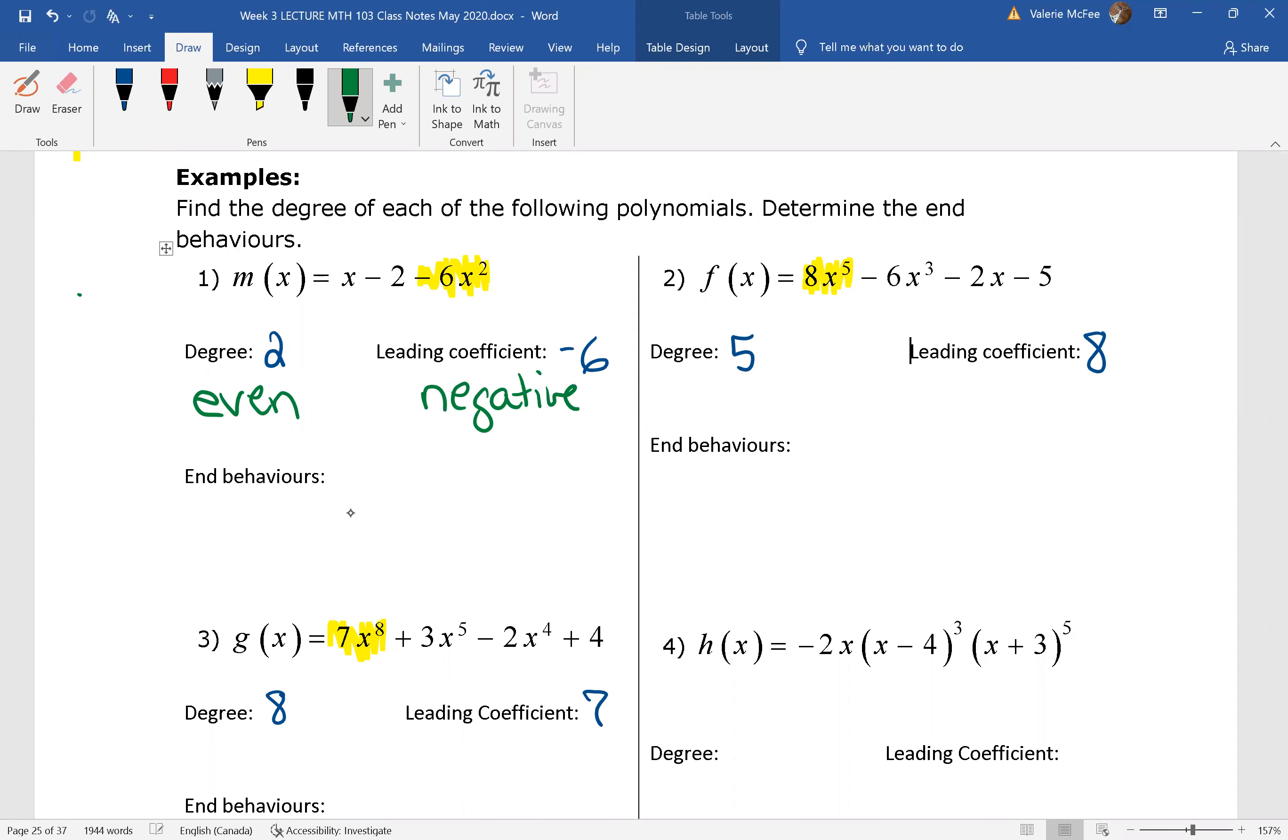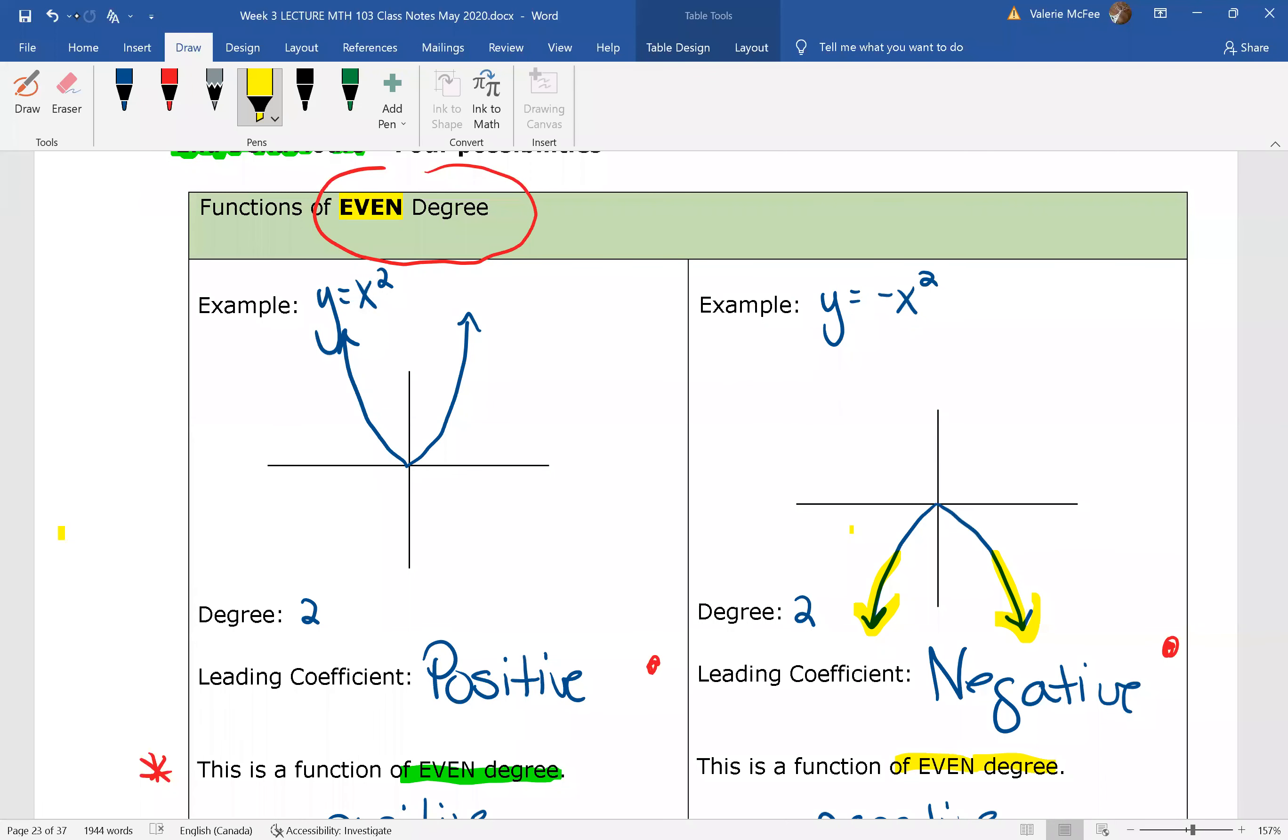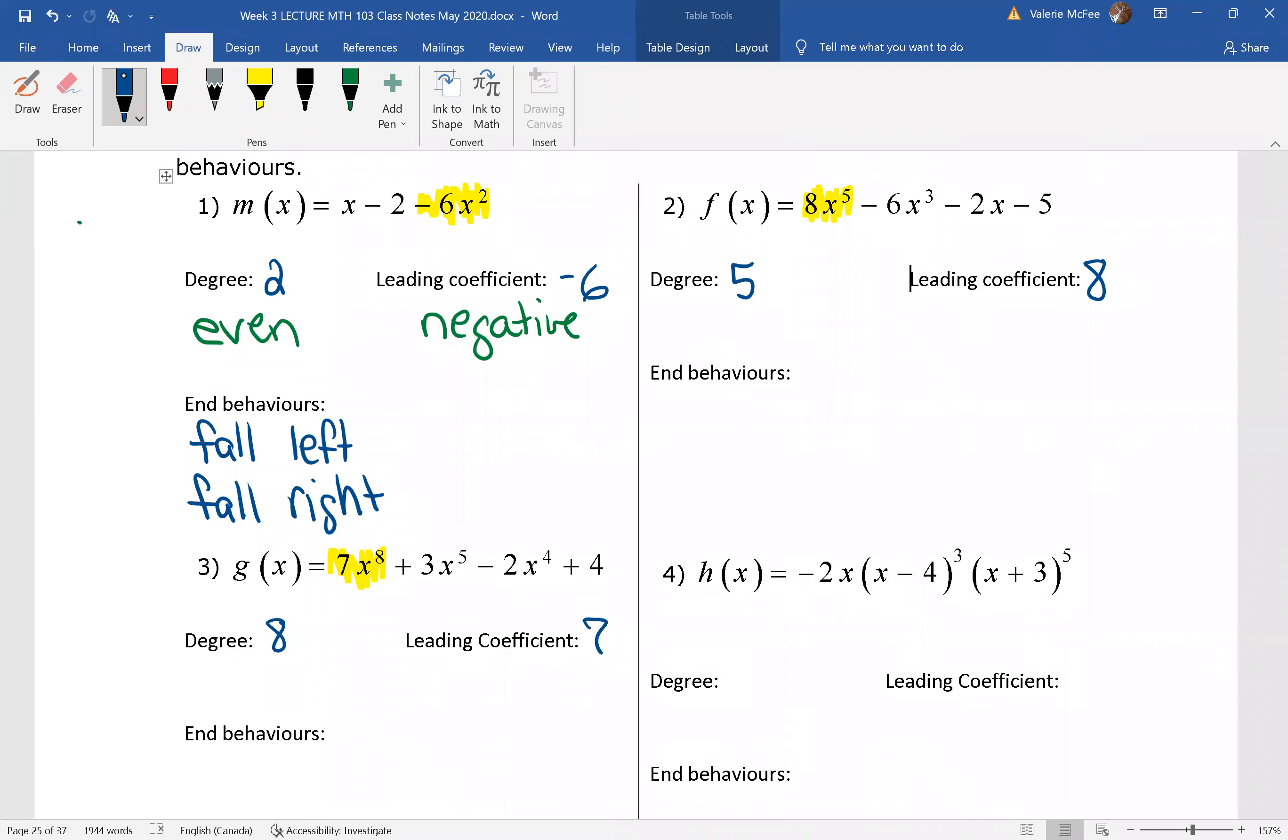Do you remember what that means? When we have an even degree with a negative leading coefficient, we know that both ends are going to fall. So we say that this is going to fall on the left and fall on the right.